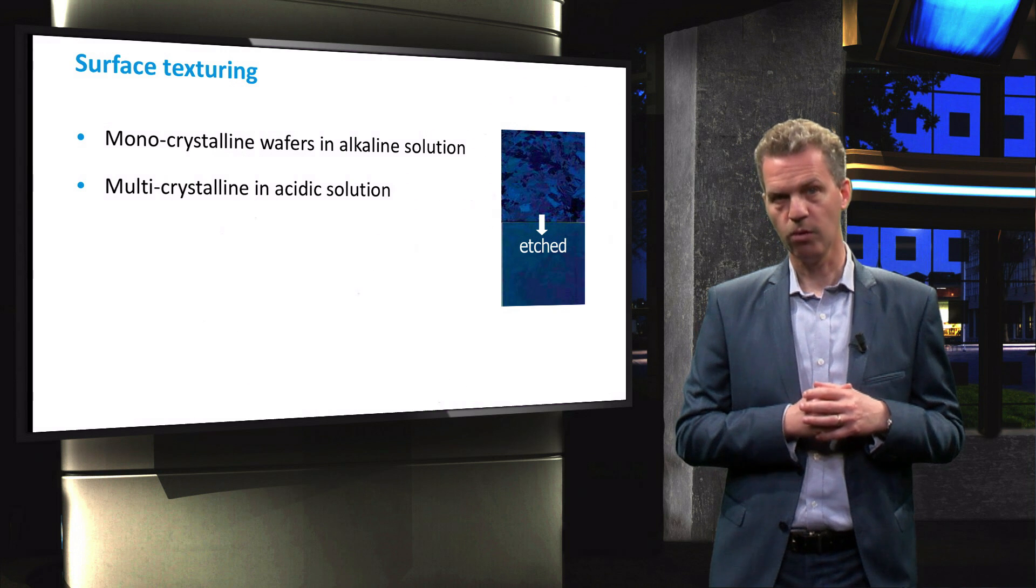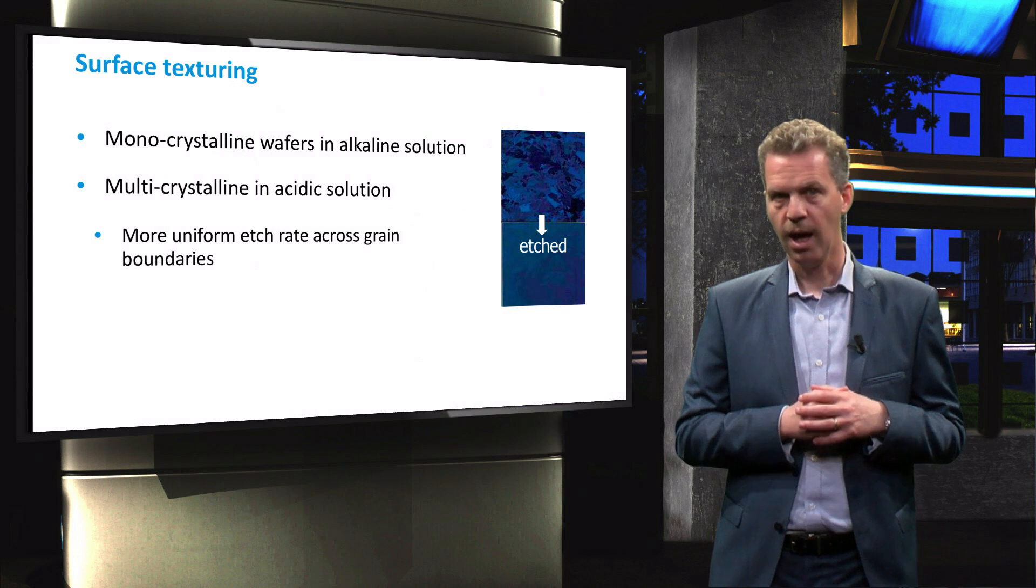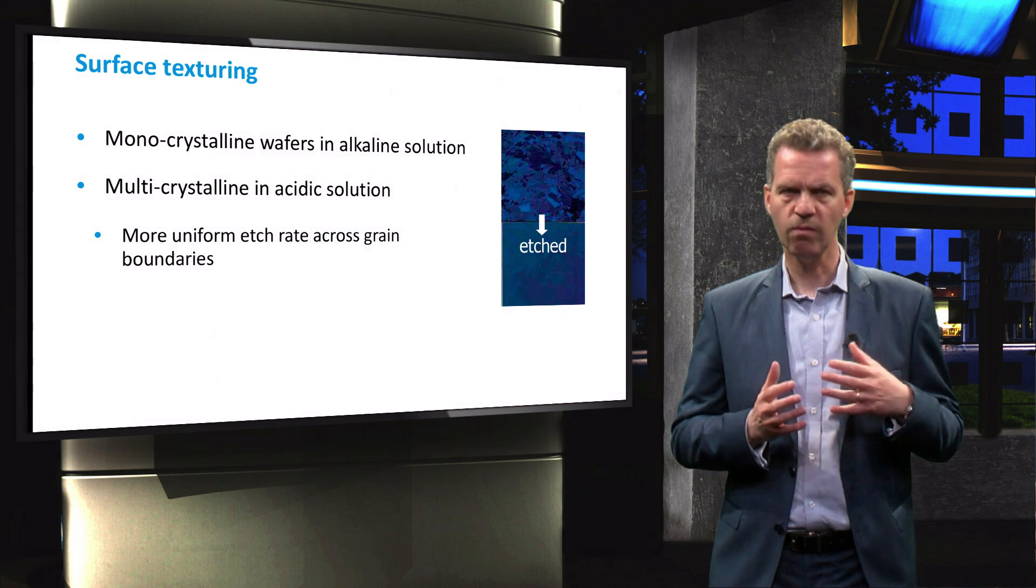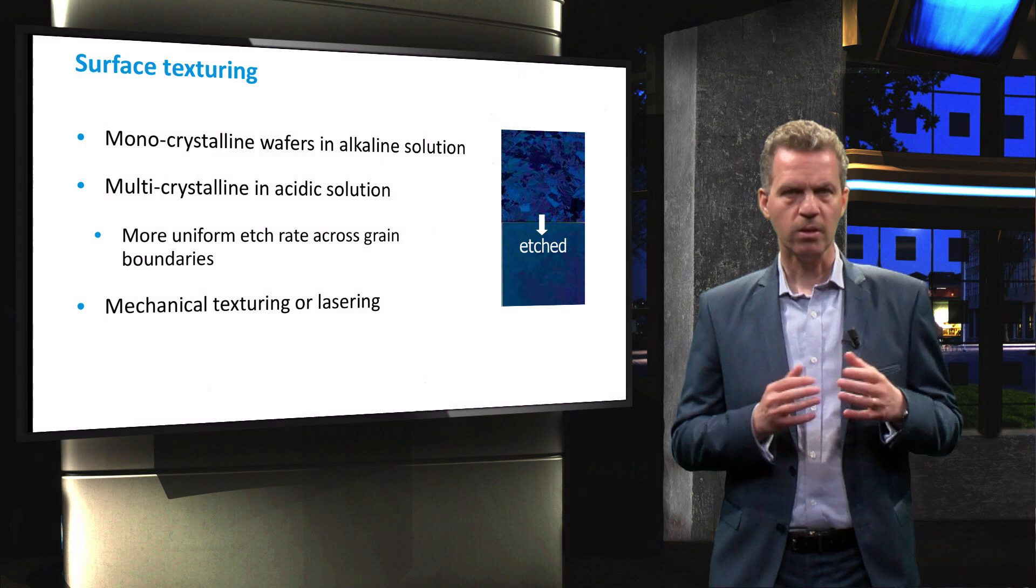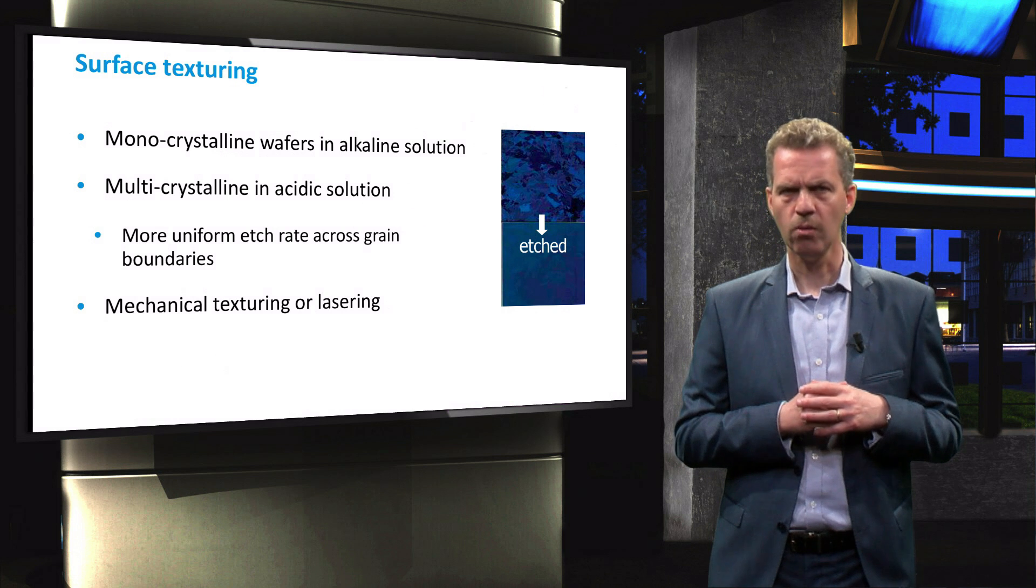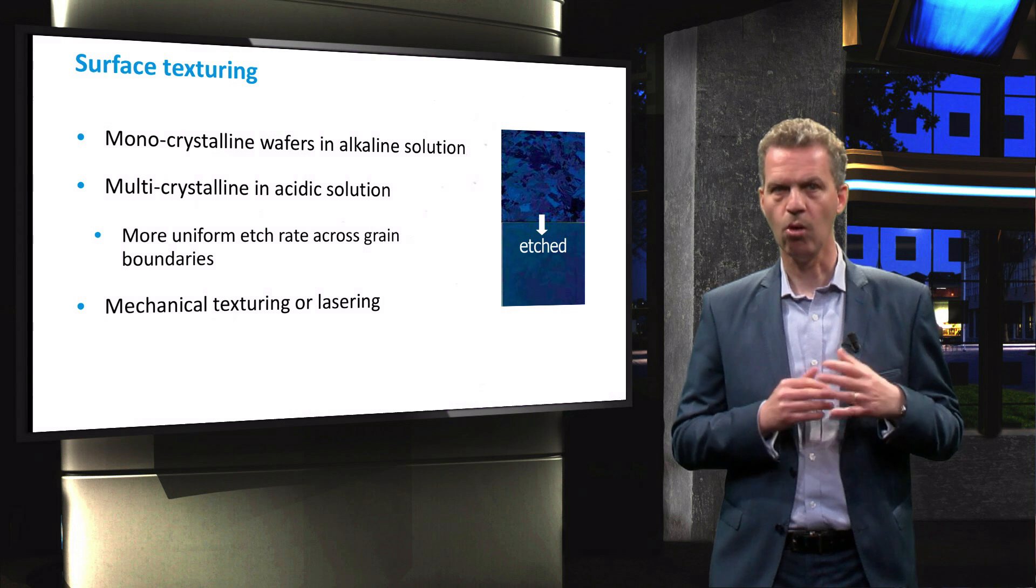An acidic solution is used for multicrystalline silicon, as this will result in a more uniform etch rate across the grain boundaries. Multicrystalline silicon wafers are also commonly textured with a mechanical process or by lasering.